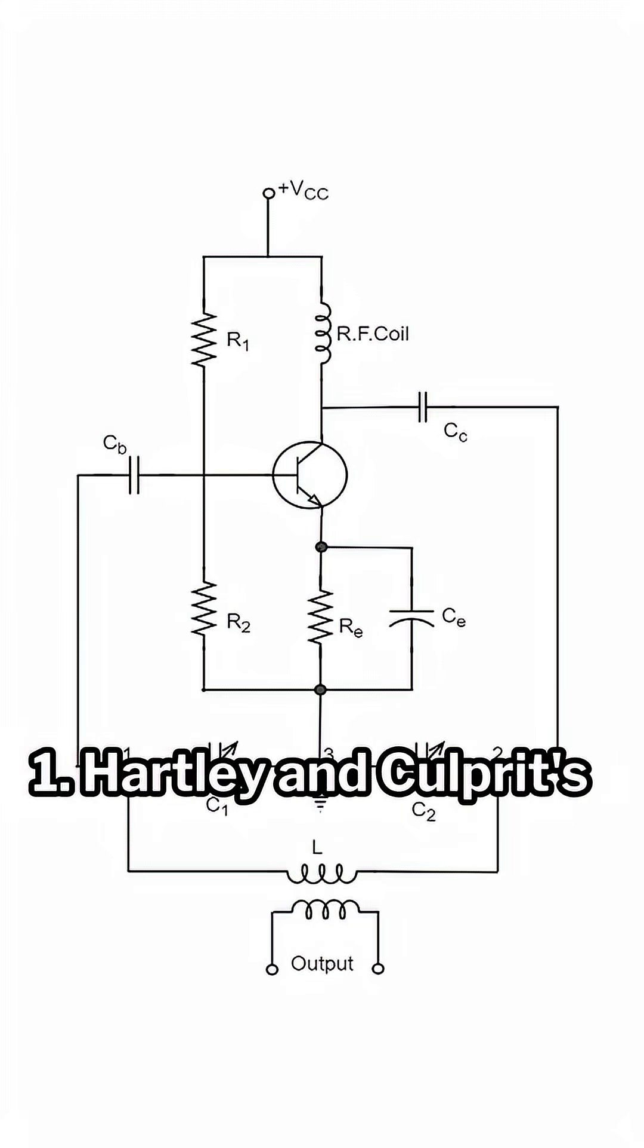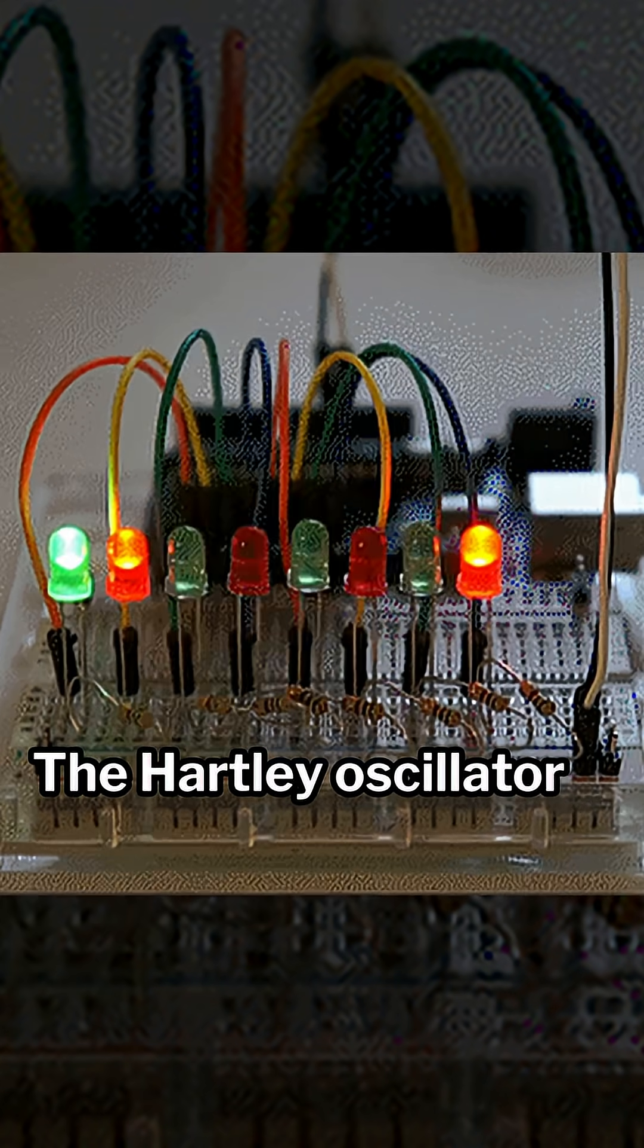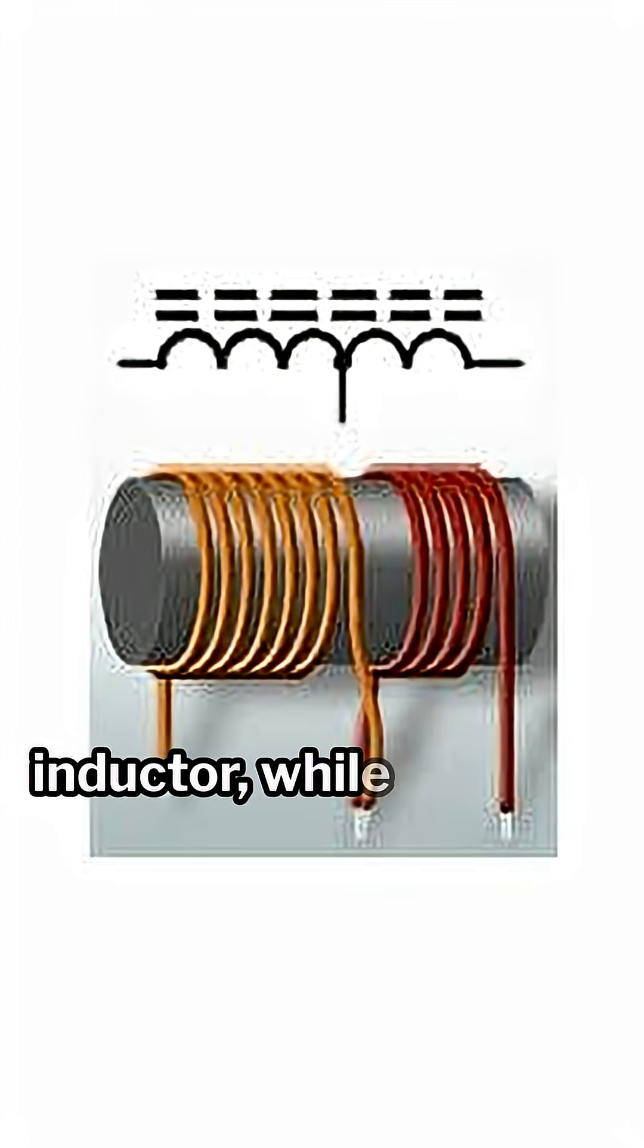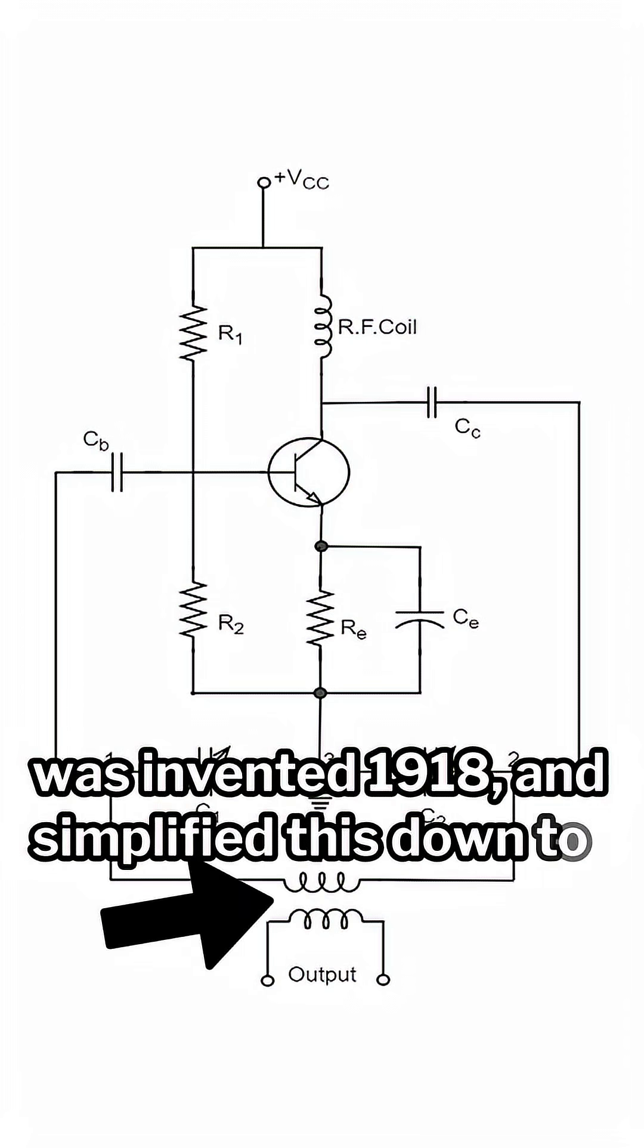1. Hartley and Colpitts oscillator circuit. First invented in 1915, the Hartley oscillator involves a center-tapped inductor, while the Colpitts oscillator was invented in 1918 and simplified this down to one inductor.